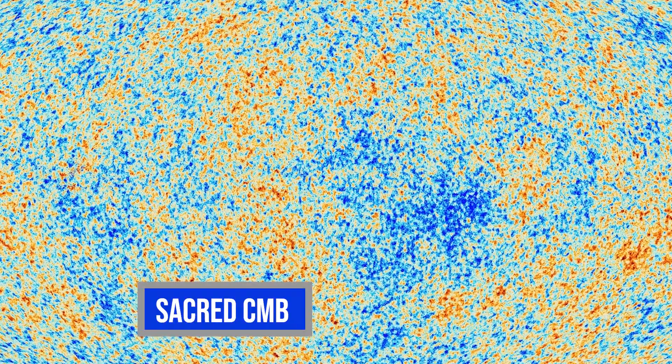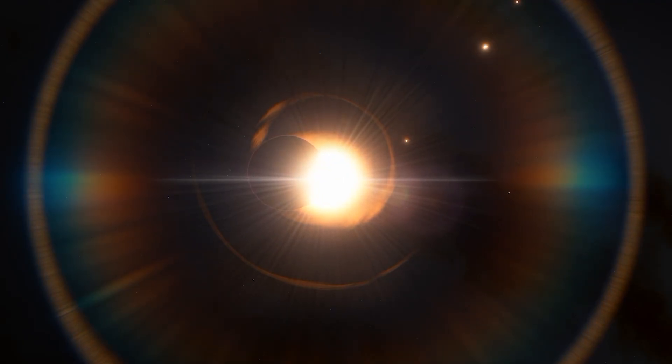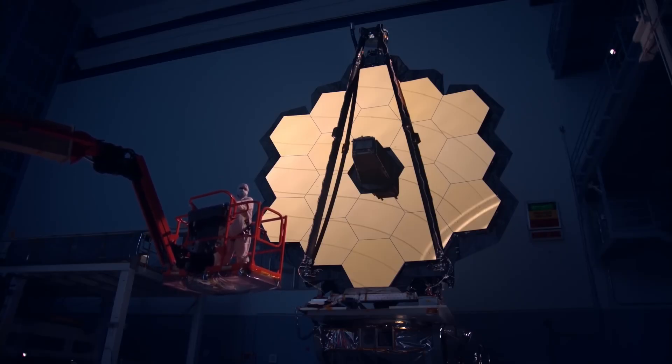Lastly, our sacred CMB is now in question. If Webb's right, and early galaxy light mimics or adds to that ancient glow, then our map of the universe's origin might be wrong. We might be looking at a mirage, one that fooled us for decades.